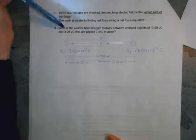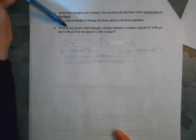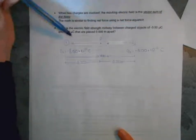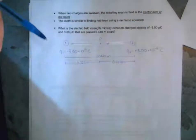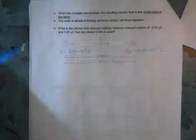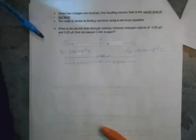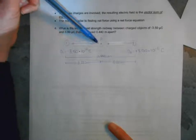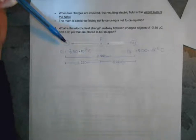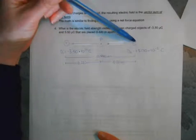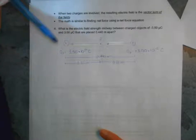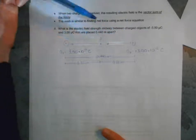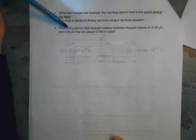For this example, it's more straightforward — only an x component. What is the electric field strength midway between charged objects of −3.5 μC and +3.0 μC placed 0.44 meters apart? Sketch it out first: the field lines from the negative charge point inward toward it, and from the positive charge they point away — both directed toward the negative charge. The distance from each charge to the midpoint is 0.22 meters.